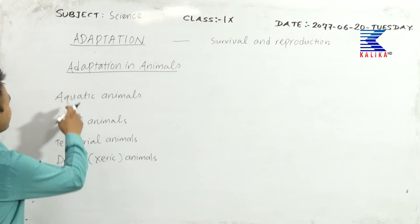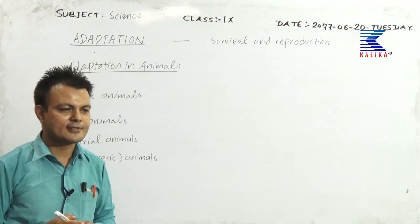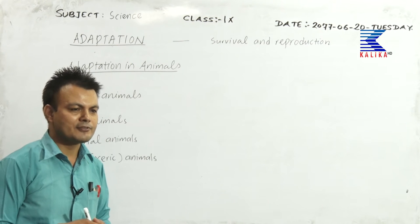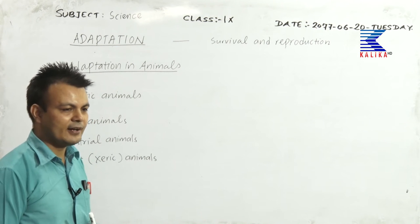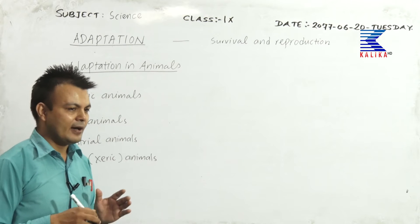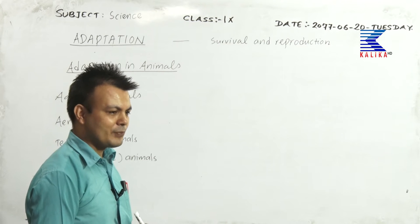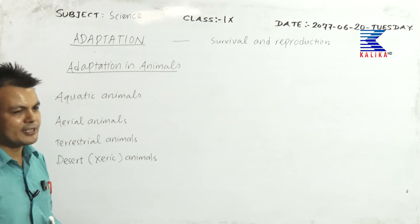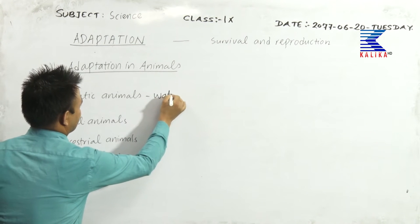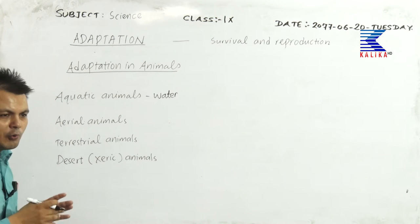Today we are going to talk about adaptation in animals. Animals have different habitats — they are found in many types of habitat. Some are found in water, some in the air, some on the land, and some in extreme cold or extreme hot areas. High altitude and polar animals are found in snow-covered areas, and some animals are found in desert — the xeric animals. Aquatic animals live in water, and we will talk about what adaptational characteristics are required to survive and reproduce while living in water.